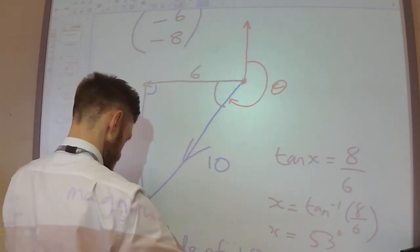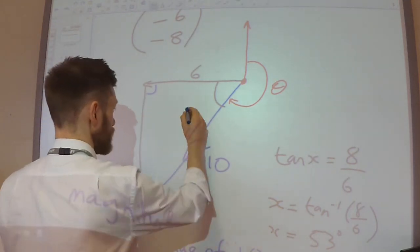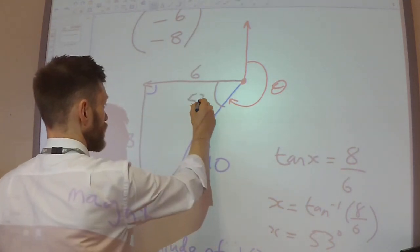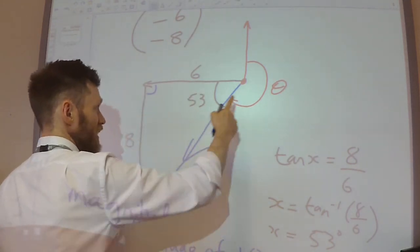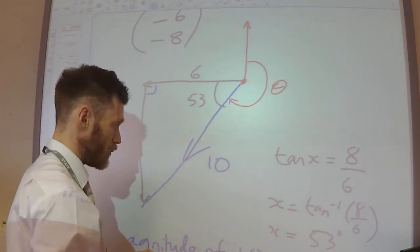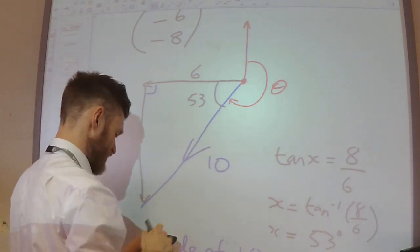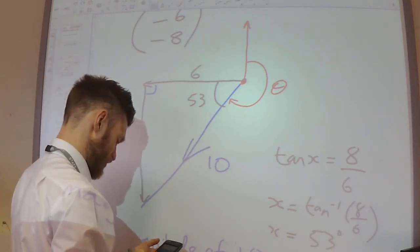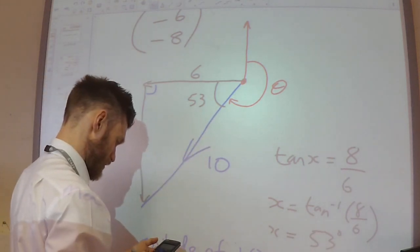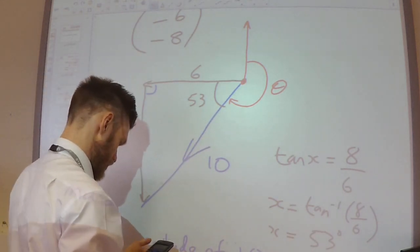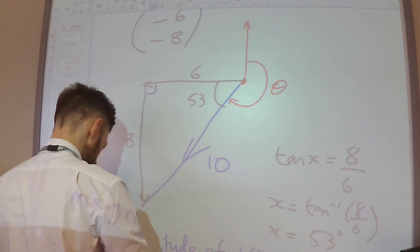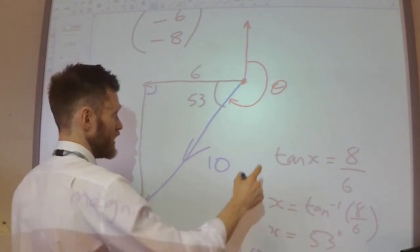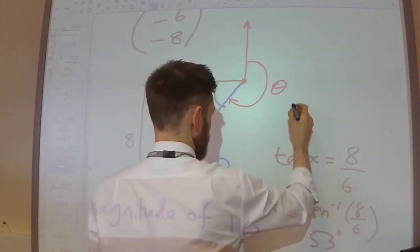If this angle is 53 degrees, the bearing will be 270 take away 53, which is going to be 217 degrees. That's it.